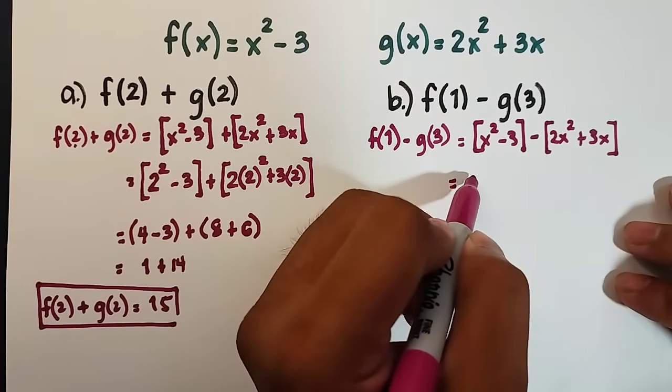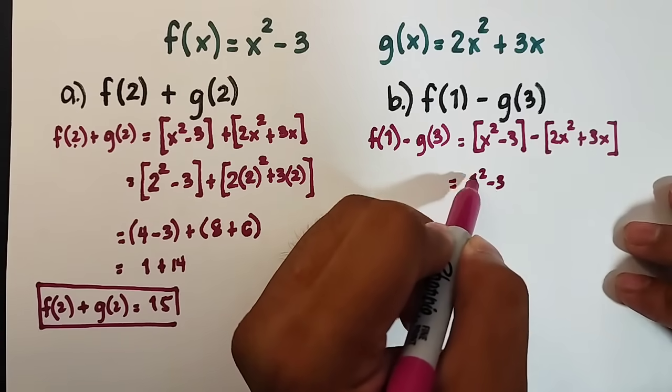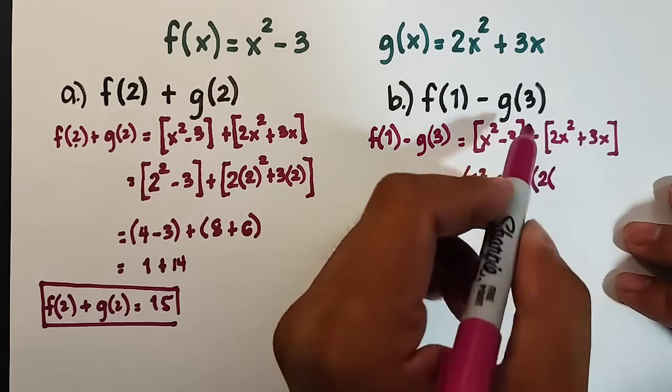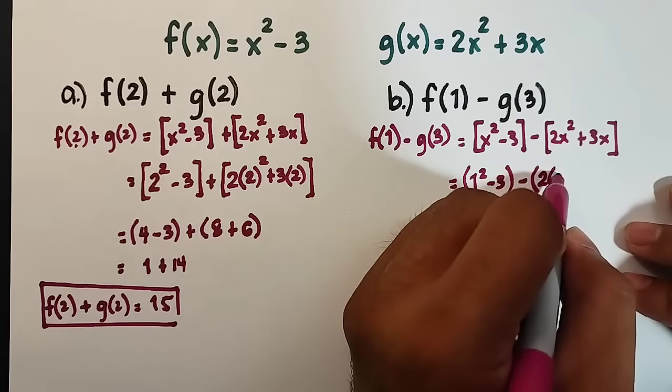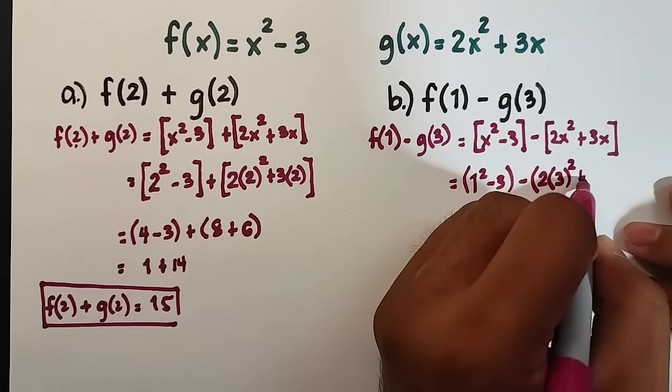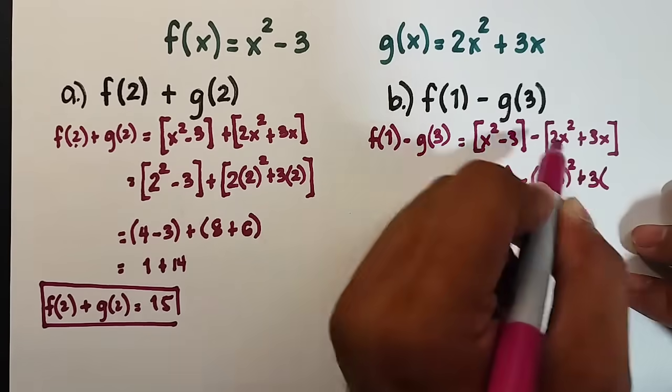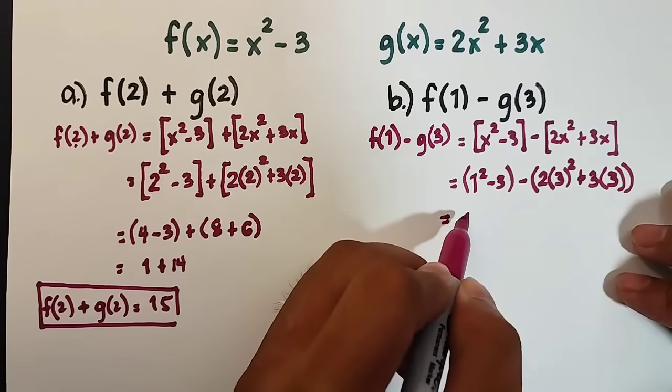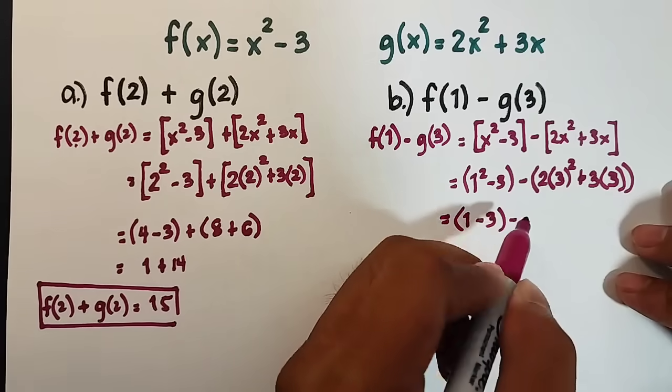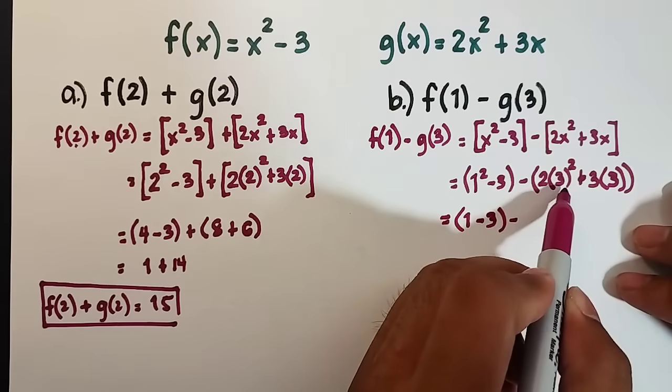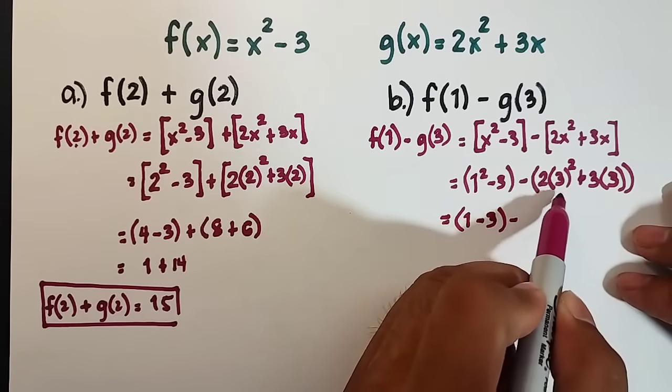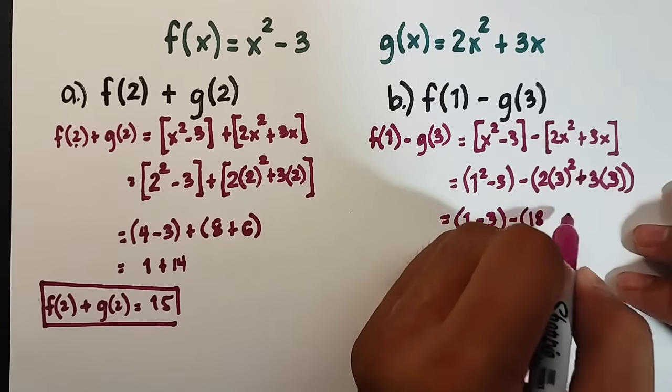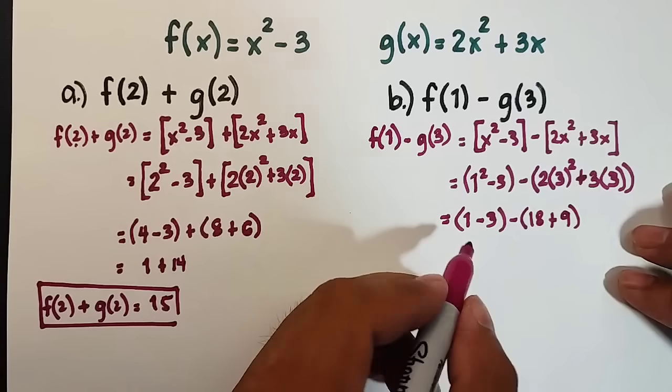We will plug in the value of x here in the f function. It will become 1² - 3 minus 2 times, your g of 3 is, your input is 3, this is 3², plus 3 times your x, which is 3. Simplify: 1² is 1, then minus 3. So we have 1 - 3. For this value, 3² is 9 times 2, that equals 18, then 3 times 3 is 9, so this is plus 9.